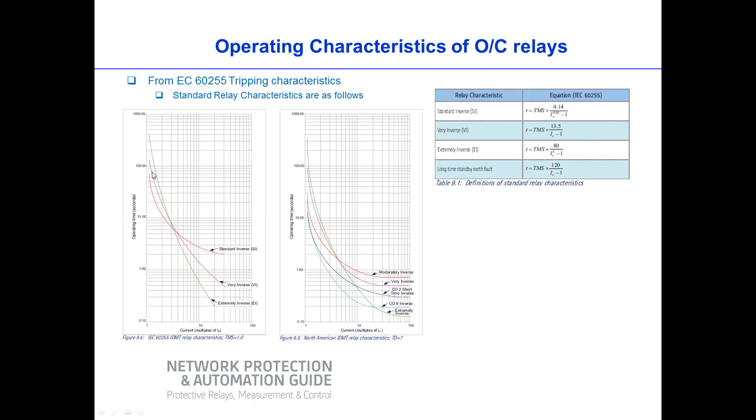And then this is the relay response or the tripping time of the relay. So the overall characteristic is when the fault current is increasing, then the tripping time of the relay becomes faster. At lower fault current, the tripping time is slower. And similarly, this is the same as this one.